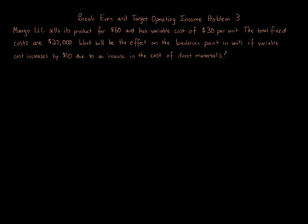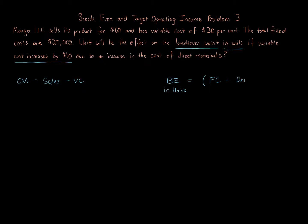This question seems a little confusing, but it's actually pretty straightforward as long as you remember your contribution margin and break-even calculations. The contribution margin is sales minus variable costs. To calculate the break-even point in units, the formula is fixed costs plus desired profit — which for break-even will be zero — over the contribution margin per unit.